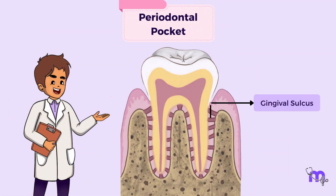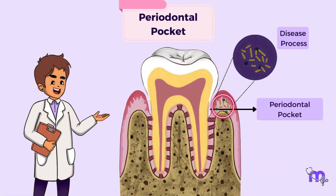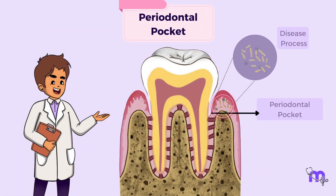Similarly, the deepening of the sulcus due to a disease process is called a periodontal pocket. The junctional epithelium migrates apically, thereby increasing the depth.